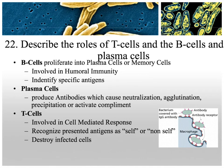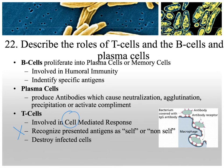B cells and T cells are both part of the third line of defense — acquired immunity. B cells proliferate into plasma cells or memory cells; they're involved in humoral immunity, identifying free-floating antigens in lymph and blood. Plasma cells produce antibodies that work through neutralization, agglutination, precipitation, or activating the complement system. T cells require antigens to be presented to them — they're involved in the cell-mediated response, attacking cells that are infected and destroying them.